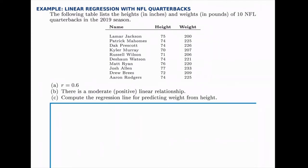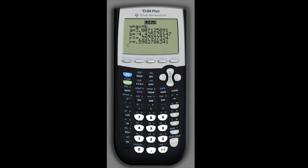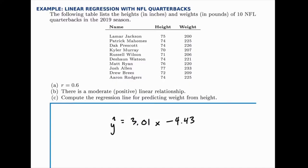The next part of the question asks for the regression line, which we've already calculated. Notice the direction here — the regression line is going to predict weight from height, meaning weight depends on height. So weight should be y and height should be x, which is how we already set it up. Going back to the calculator, we can see that a is about 3.01 and b is negative 4.43, giving us the regression equation.